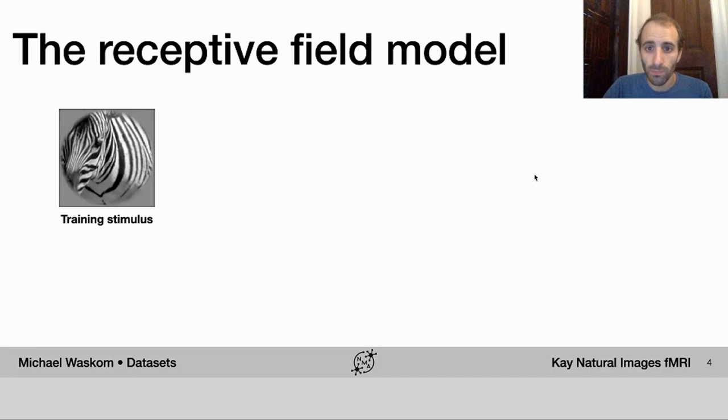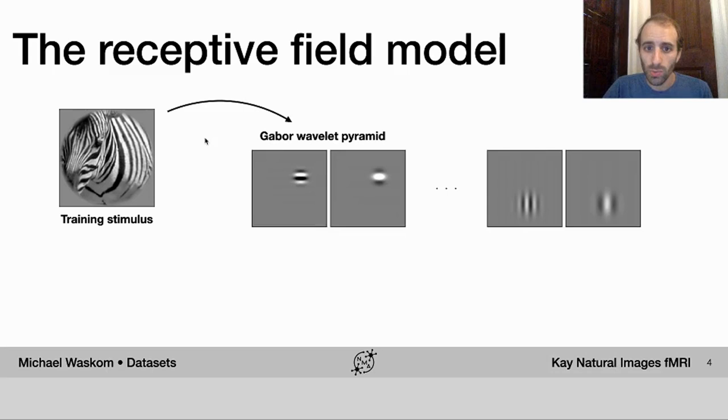I'm going to tell you a little bit about the model that was presented in the original paper because it'll give you a sense of how you might analyze and work with these data. You can read the paper if you're interested in the details. The basic idea was to model the responses to each individual image with a set of simple image filters called a Gabor wavelet pyramid. So each filter is a Gabor, which is a sine wave grading multiplied by a Gaussian. And each filter has a different spatial position, spatial frequency, orientation, and size.